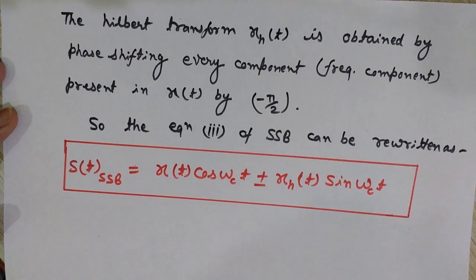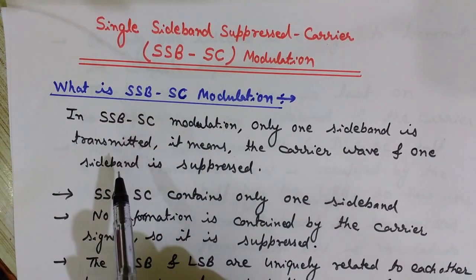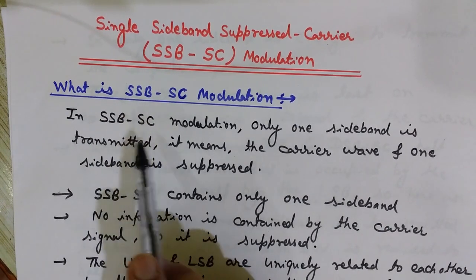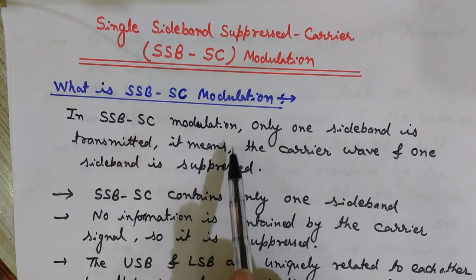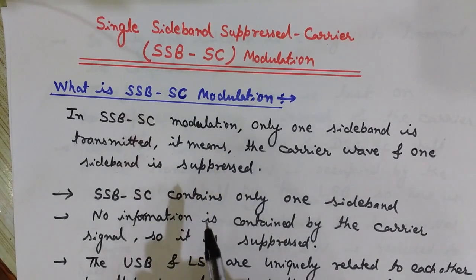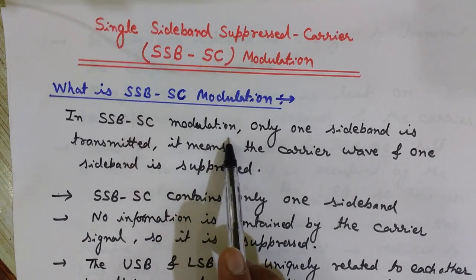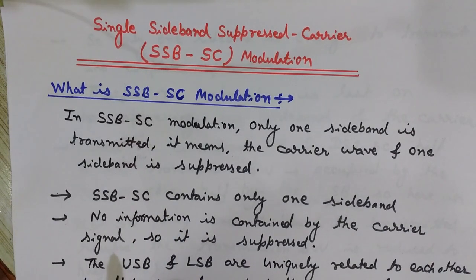Let's understand what SSB-SC modulation is. You should know the basics of amplitude modulation before understanding this. In amplitude modulation, the amplitude of the carrier wave is varied according to the instantaneous value of the modulating signal — the message signal we want to transmit. In conventional AM, we have two sidebands and one carrier wave.